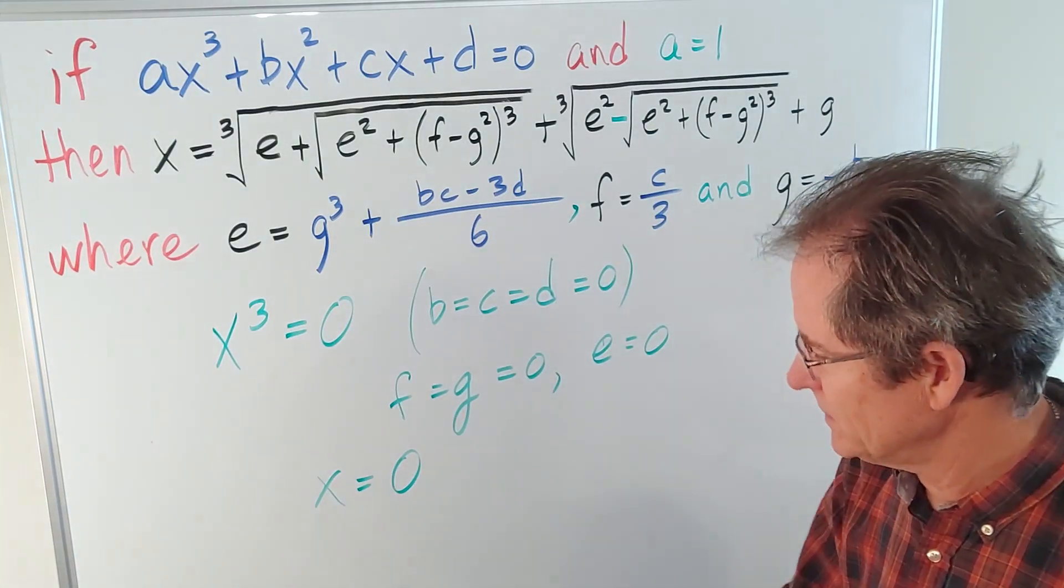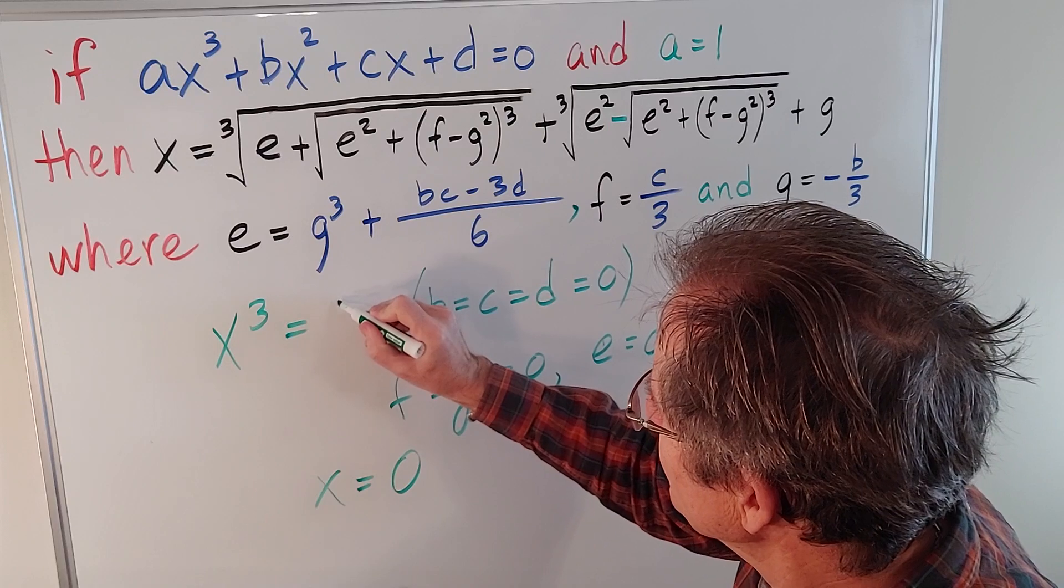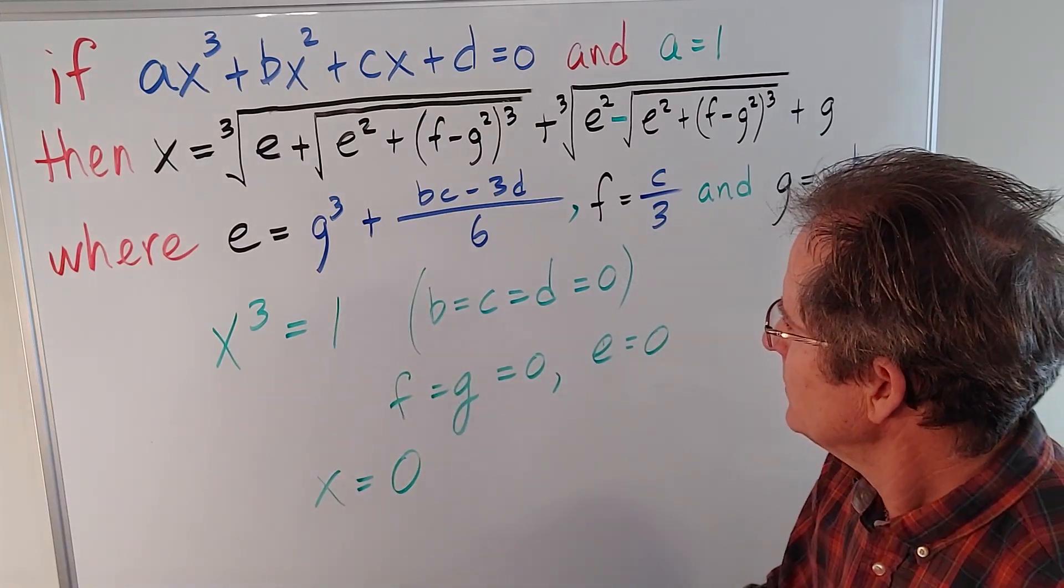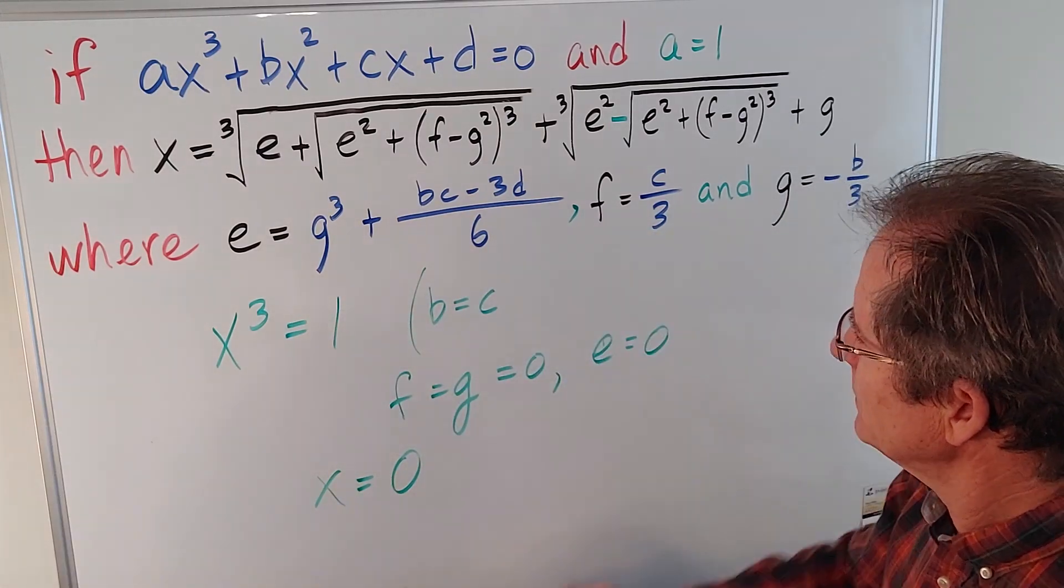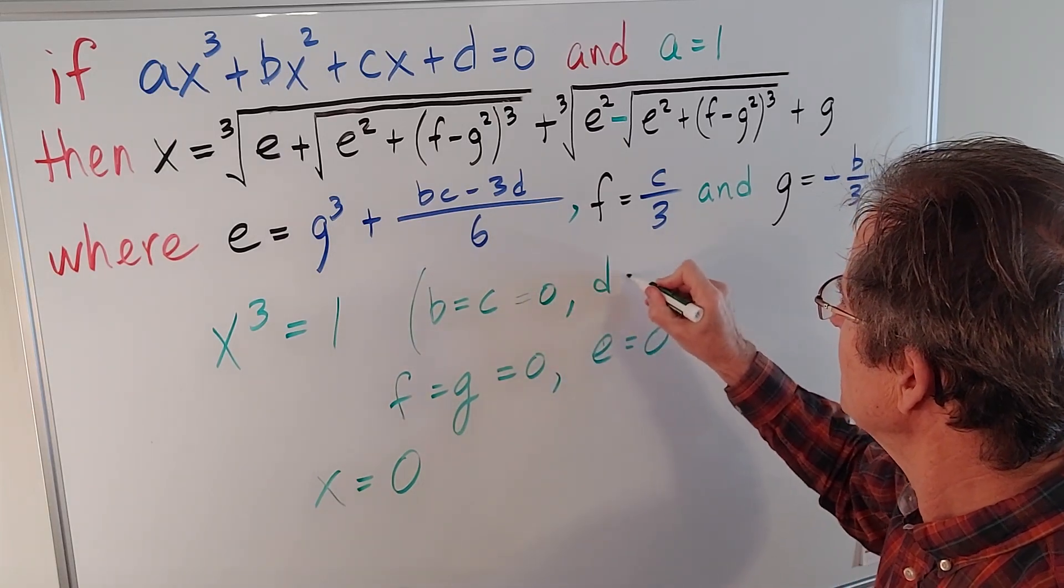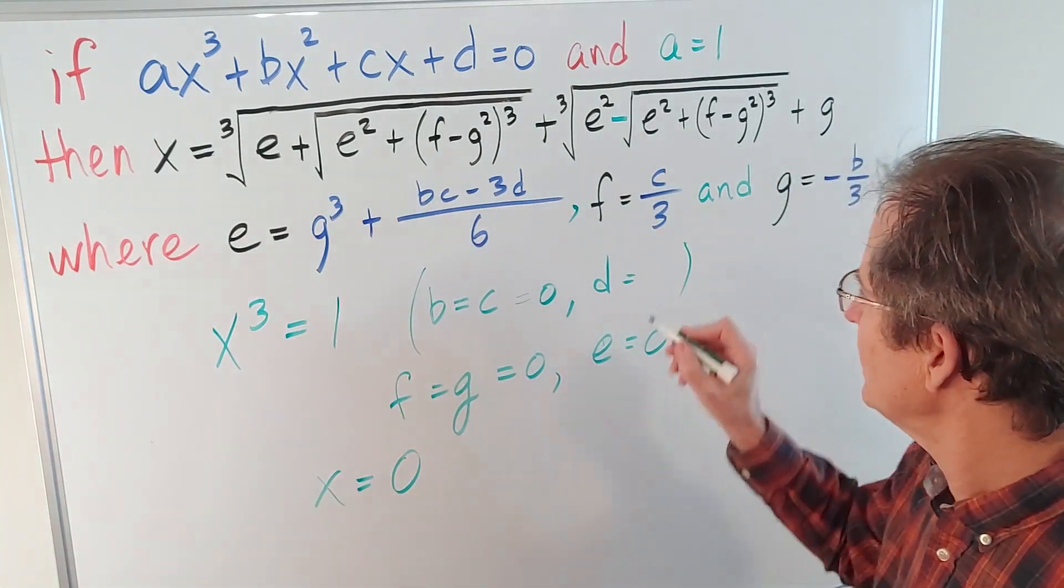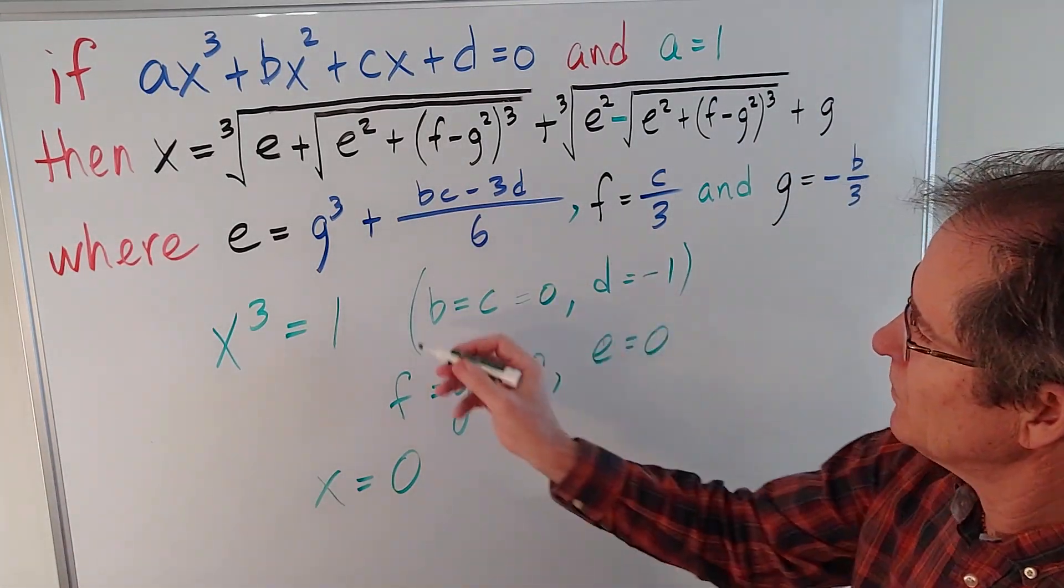Not much of a surprise there. Now let's do x equals 1. So b and c are still 0. But what's d? 1? No. Negative 1, right. Because I've got to bring that 1 to the other side.